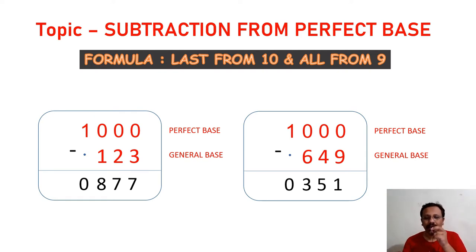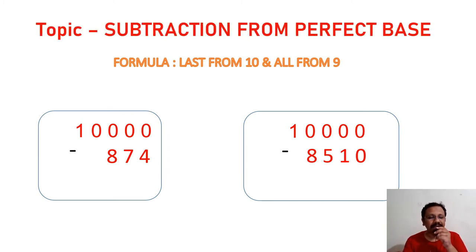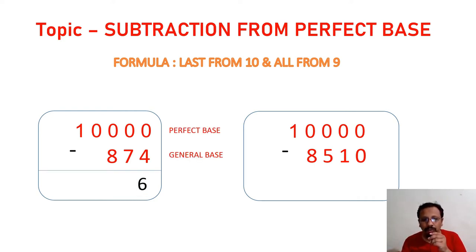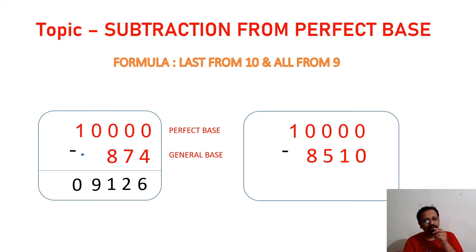Write this down — we'll go with more examples. Next: 10,000 minus 874. Complementary of 4 using base 10 is 6, complementary of 7 is 2, complementary of 8 is 1. Below the 0 there is nothing, meaning 0, so the complementary of 0 using base 9 is 9. Place a dot below 1, so 1 minus 1 equals 0. Our answer is 9126.